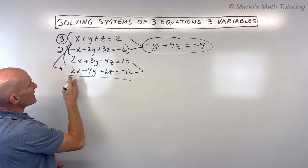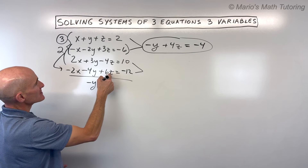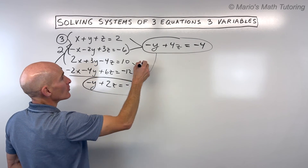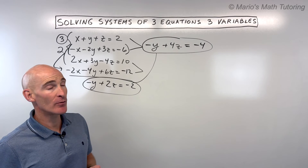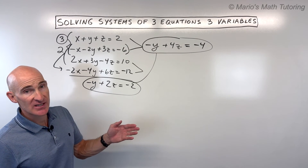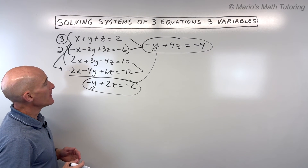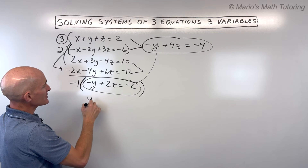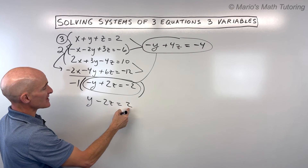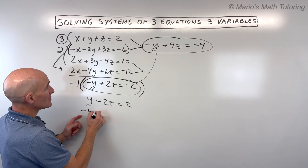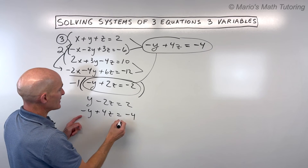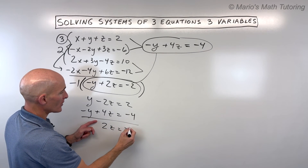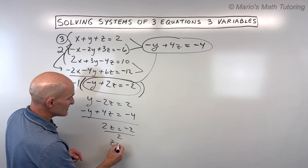Adding the multiplied equation three (negative 2x minus 4y plus 6z equals negative 12) to equation two: x's cancel, 3y plus negative 4y is negative y, 6z plus negative 4z is 2z, and negative 12 plus 10 is negative 2. So we get negative y plus 2z equals negative 2. Now we have two equations with two variables. To eliminate the y's, I'll multiply negative y plus 4z equals negative 4 by negative 1, flipping all signs to give y minus 2z equals 2. Adding to negative y plus 2z equals negative 2: the y's cancel, giving 2z plus negative 2z... wait — negative 2z plus 4z gives 2z equals negative 2. Dividing both sides by 2, z equals negative 1.